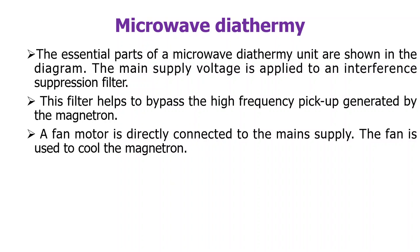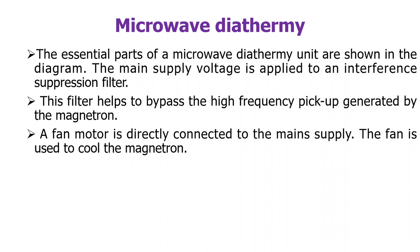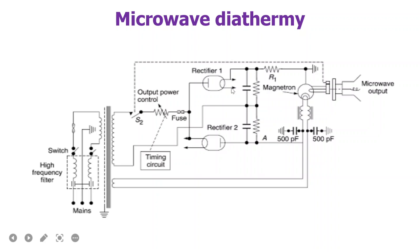The essential parts of microwave diathermy are shown in the diagram. There are filter arrangements for supply voltage suppression, and these filters also help to suppress high frequency interference generated by the magnetron. A fan is also used. In the diagram, the mains are connected to a transformer with a high frequency filter to avoid interference. The secondary of the transformer is given to a rectifier circuit, and from the rectifier the input is given to the magnetron. The magnetron acts as an oscillator and produces the microwaves, which are directed towards the antenna and reflector and sent to the body.